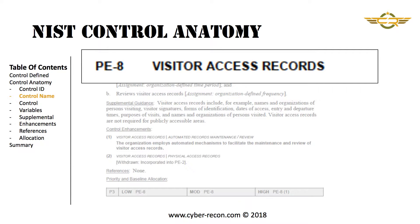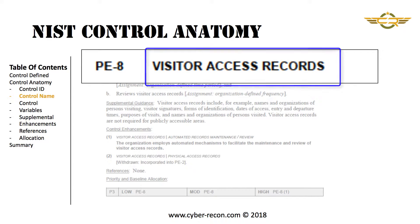Next is the name of the control. In this case, it's Visitor Access Records. If this were an enhancement, the control name Visitor Access Records would be followed by a vertical line and then the name of the enhancement — for example, Visitor Access Records | Automated Records Maintenance/Review.